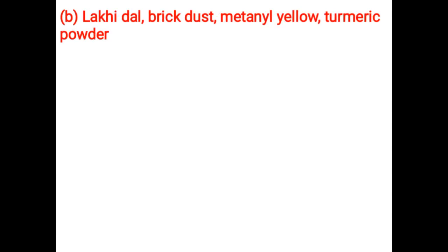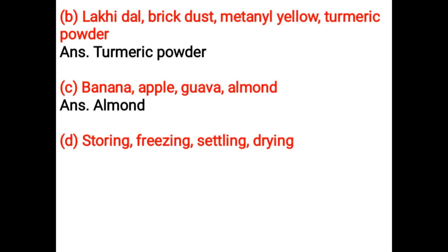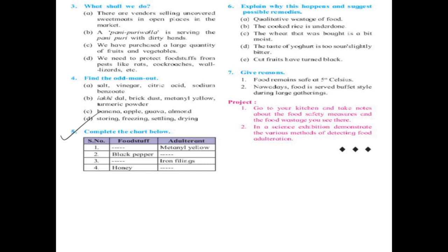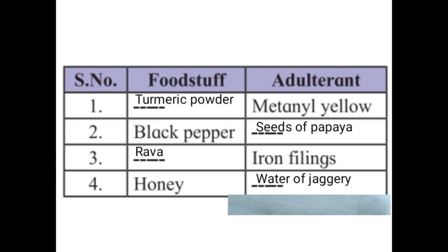Lucky dal, brick dust, arnil yellow, turmeric powder — the odd one is turmeric powder. Black pepper, seeds of papaya, iron filings, rava — honey, water of jaggery.